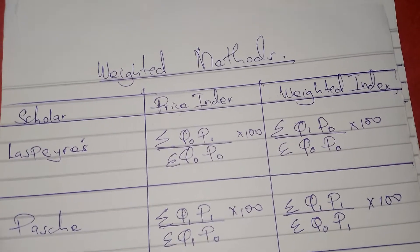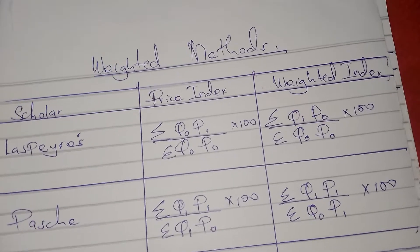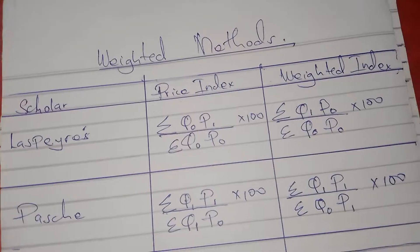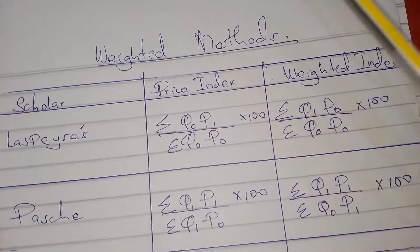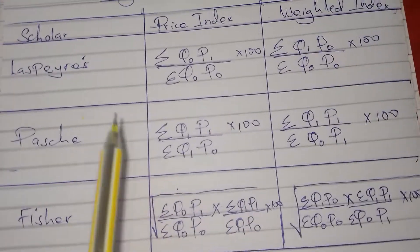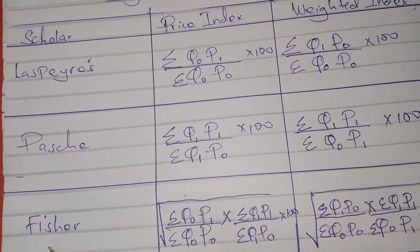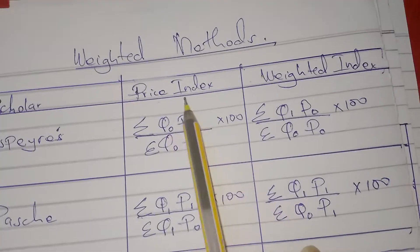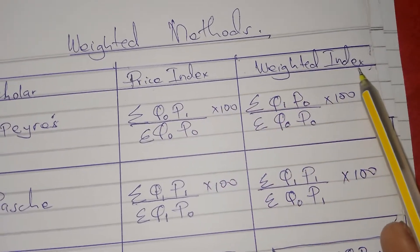Let's look at the weighted methods. In the previous videos we managed to look at the unweighted methods — that is the simple aggregate and simple relative methods. For the weighted methods, we have three scholars: Spayless, Paasche, and Fisher. For each of these we have the price index and the weighted index.